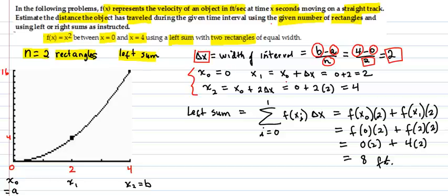x one equals x zero plus one increment, which gets you to two. And x two, which is x n, is equal to x zero plus two of those increments, which gets you to the four.